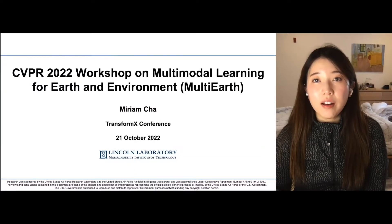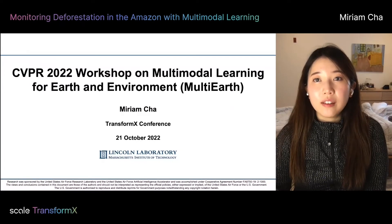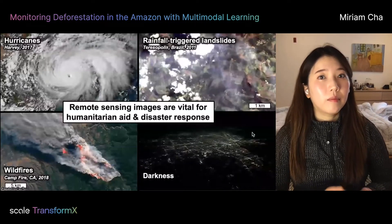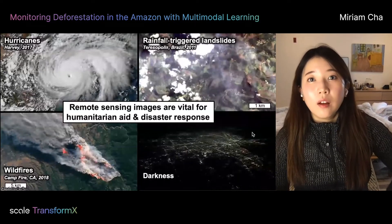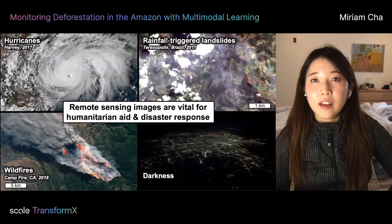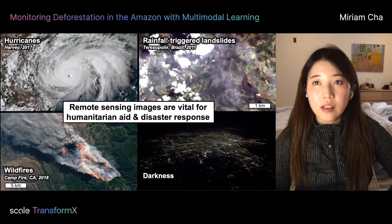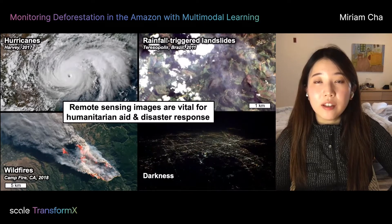For this presentation, I will give an overview of the dataset and challenge problems that we released for the first workshop on multimodal learning for earth and environment, hosted at CVPR this year. Remote sensing images play a critical role in humanitarian aid and disaster response missions, as they enable wide area imaging of interested sites.